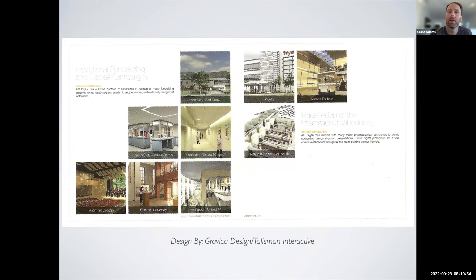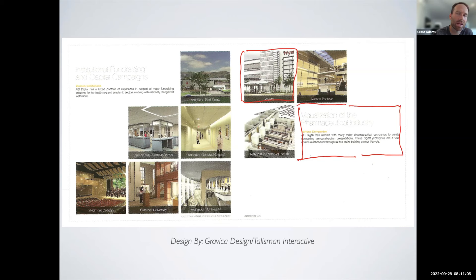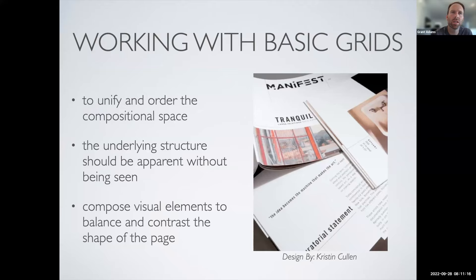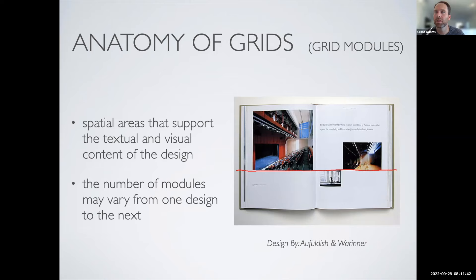How do we work with this basic grid? We're using it to unify and order the compositional space — giving an underlying structure that helps organize our thoughts and elements. But it's also not on top of us; we're not seeing it that much. In a lot of the examples I've shown, it's pretty hard to see that there's an underlying grid structure. There is most definitely an underlying grid structure, but it's not as blatantly obvious as it could be.